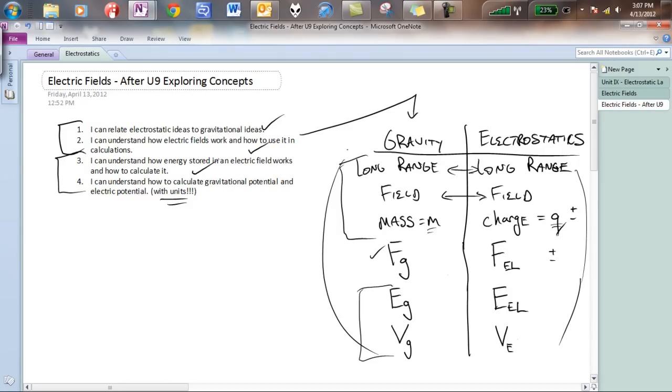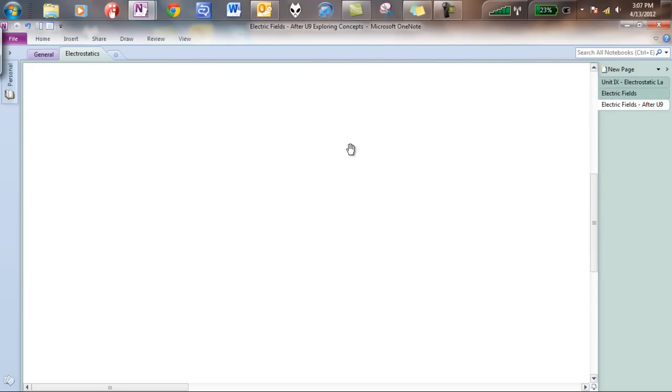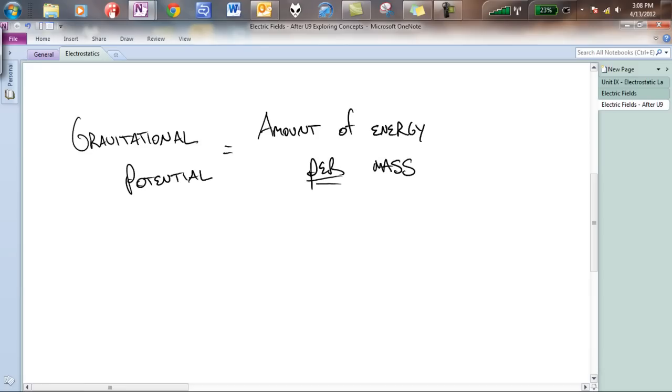So going back to our targets, I can understand how energy stored in an electric field works and how to calculate it. And number four, this is going to be a little bit of a different idea here. We are going to talk about gravitational potential. So gravitational potential, what is gravitational potential? Gravitational potential, by definition, is going to be the amount of energy per mass. So, if we were to go back to understanding this, it is talking about how much energy stored gravitationally per mass. This gives us an idea of saying, we don't even need to know a mass in this case, if you place something in this object, it would give us the amount of joules per kilogram.